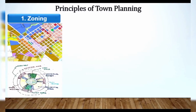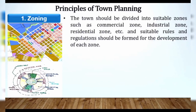The first principle of planning is zoning. What is zoning? You have to divide your area of the town in such a way that you are giving separate zones for open spaces, commercial areas, residential areas, and industrial areas. The town should be divided into suitable zones such as commercial zone, industrial zone, residential zone, etc. Suitable rules and regulations should be formed for the development of each zone.